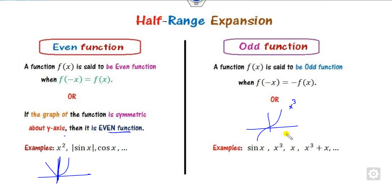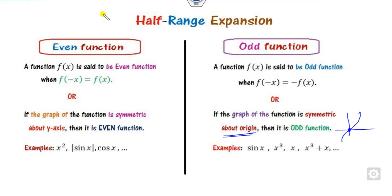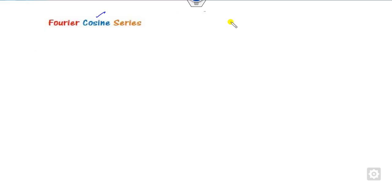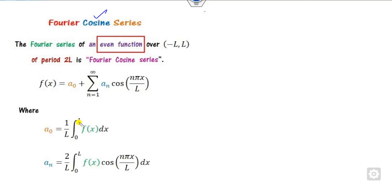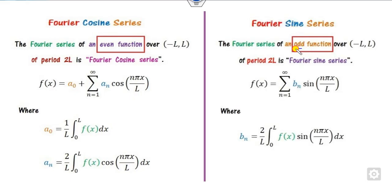Once you define odd and even functions, we can define the Fourier half range expansion. There are two kinds: the Fourier cosine series and the Fourier sine series. For a function of period 2l that is even, there is no need to write bₙ — that is, bₙ = 0 for the Fourier cosine series. Here a₀ and aₙ are given by integrals over 0 to l with a factor of 2/l. For the odd function (Fourier sine series), a₀ = 0 and aₙ = 0, while bₙ is nonzero.